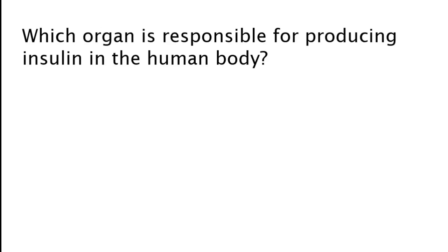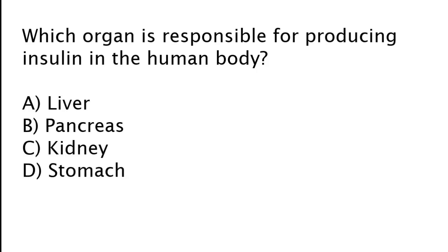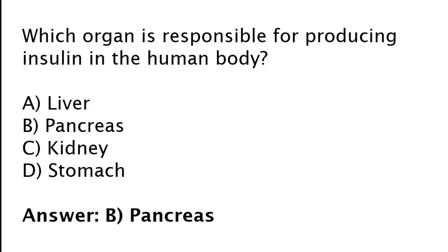Which organ is responsible for producing insulin in the human body? Liver, pancreas, kidney, or stomach? The correct answer is option B. Pancreas is the organ responsible for producing insulin in the human body.